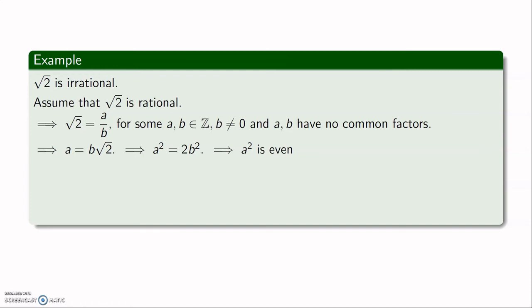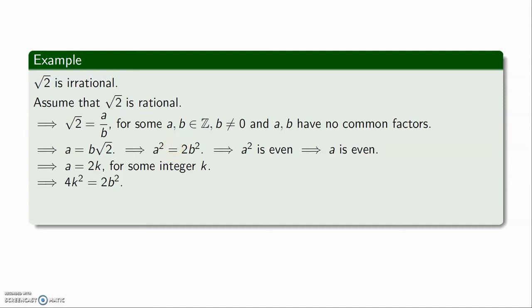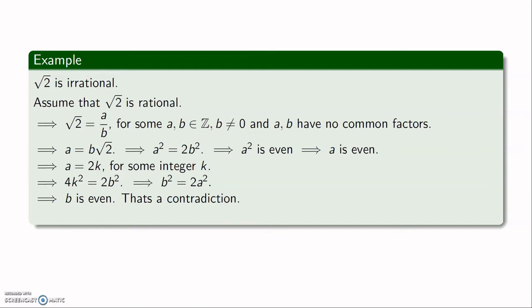Since a² = 2b², a² is even, which means a is even. So a = 2k for some integer k. Substituting, (2k)² = 2b² gives 4k² = 2b², so b² = 2k², meaning b² is even and hence b is even. So both a and b are even, giving 2 as a common factor — a contradiction, since we assumed a and b have no common factors. Therefore our assumption that √2 is rational is false, and √2 is irrational.